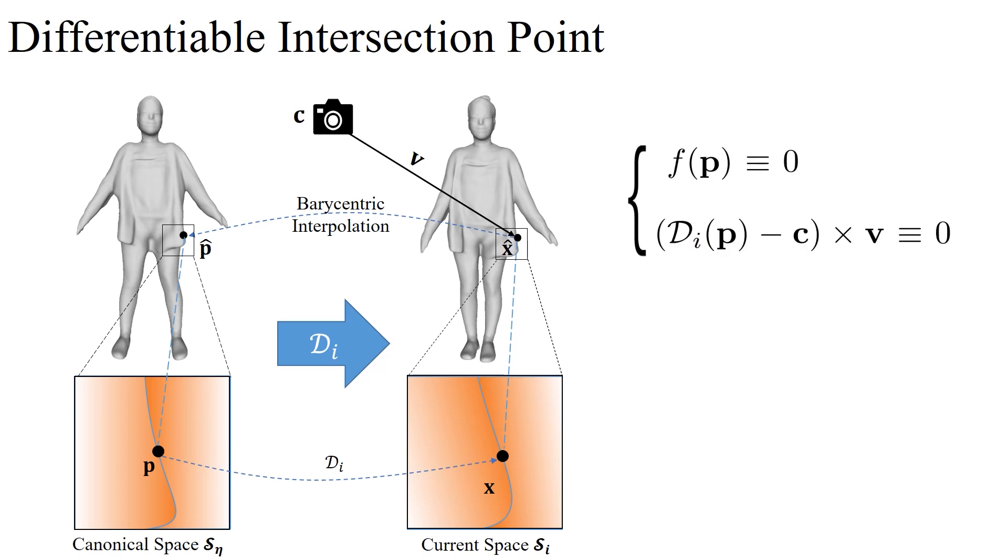Because an intersection point shall always satisfy two conditions, P is on the implicit surface and deformed P lies on the ray. We formulate the constraints as equations and leverage the implicit differentiation theorem to attain the gradient of P relative to some MLP's weight.